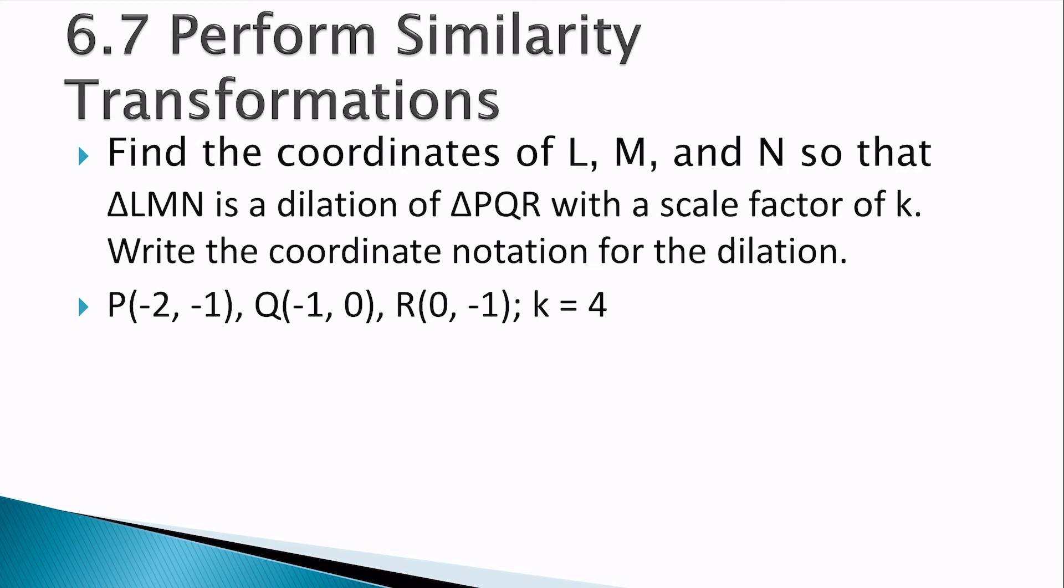Find the coordinates of L, M, N so that triangle LMN is the dilation of triangle PQR with a scale factor of k. Write the coordinate notation for the dilation. So our coordinate notation is x, y goes to kx, ky. Only k is 4. So x, y goes to 4x, 4y.